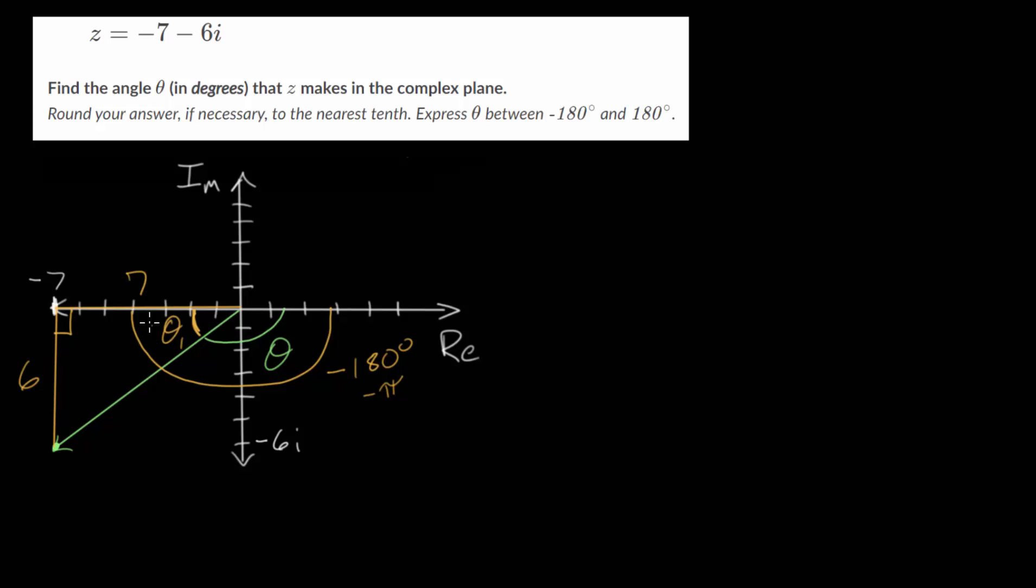Because we have this right triangle, we can use the right triangle trigonometry. We can use our SOHCAHTOA. We have the side opposite the angle and the side adjacent the angle. So we have O and A, which means we should use tangent.